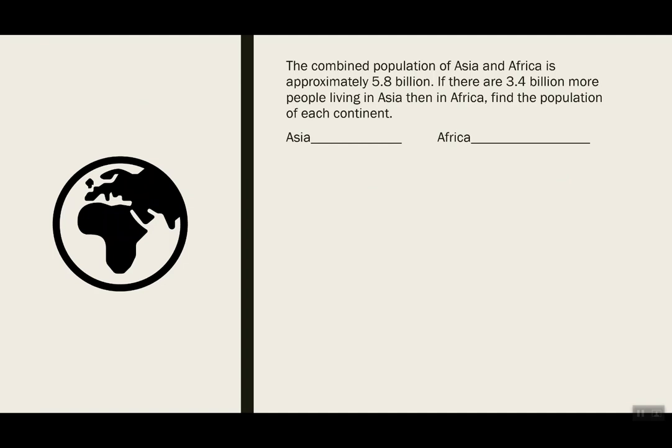Example one: the combined population of Asia and Africa is approximately 5.8 billion. If there are 3.4 billion more people living in Asia than in Africa, find the population of each continent. So what do we know? We know the combined population of the two continents, and we also know there are 3.4 billion more people in Asia than in Africa. I'm going to start by choosing a variable x — it's going to be my unknown — and I'm going to let it be the number of people in Africa because it's smaller. So this will be the number of people, in billions, in Africa.